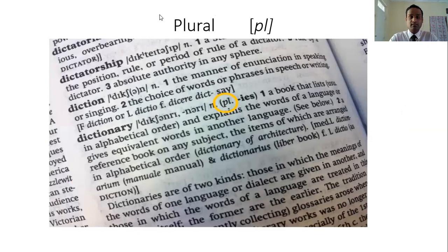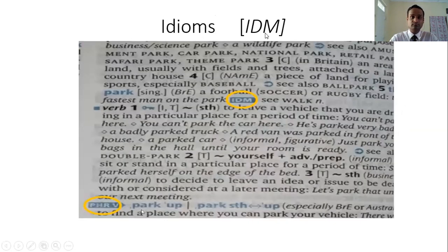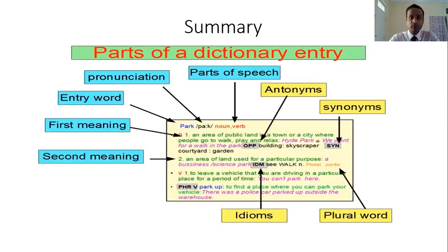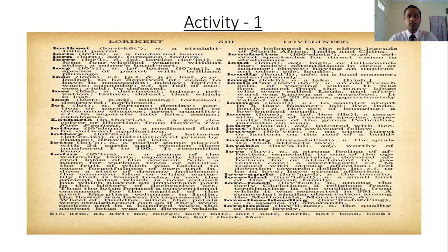Plural also has a symbol 'pl'. Idioms and phrasal verbs are similar — you just find the abbreviation related to that word, whether it is a synonym, opposite word, or idiom, and the word after that symbol is the opposite or synonym of the main entry word. Here is the summary: antonyms — symbol 'opp'; synonyms — symbol 'syn'; plurals, idioms. There can be more than one meaning for one word. You should be very thorough with these parts of the dictionary.